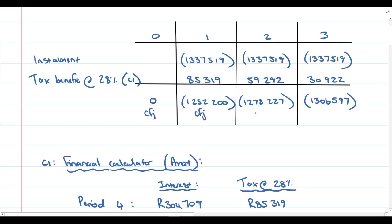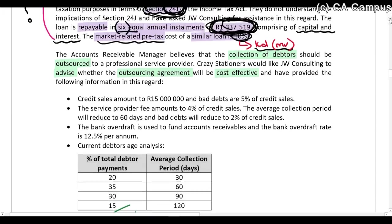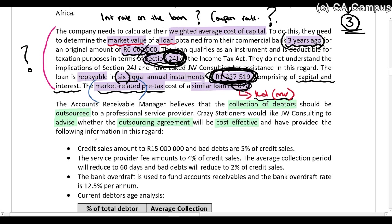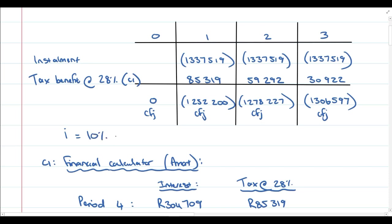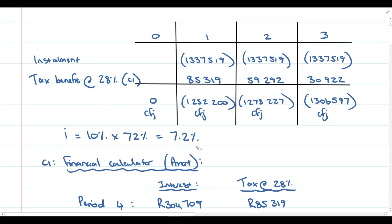Total all of the future cash flows. Then input all those cash flows into your financial calculator to calculate the NPV. The discount rate to use is the market-related rate — the rate on similar loans — which is the cost of debt. Be careful: that's the pre-tax rate, so if you want the after-tax rate, multiply by 72% because the tax rate is 28%, giving 7.2%. Your cash flows are after-tax and the discount rate is also after-tax — everything is after tax because we're dealing with debt where interest is tax deductible. Solving for NPV gives you the market value.